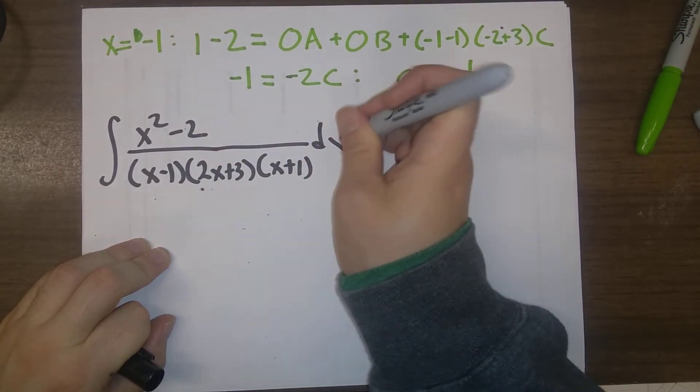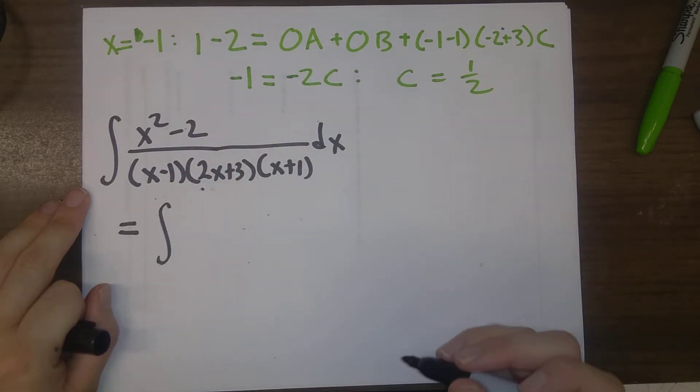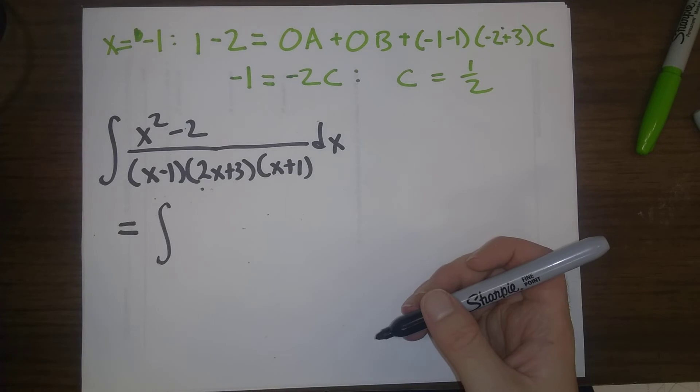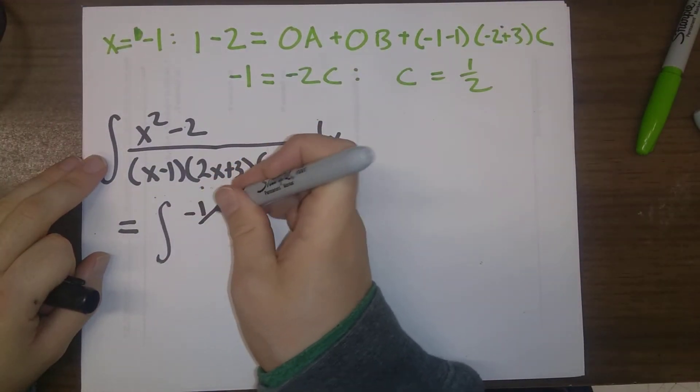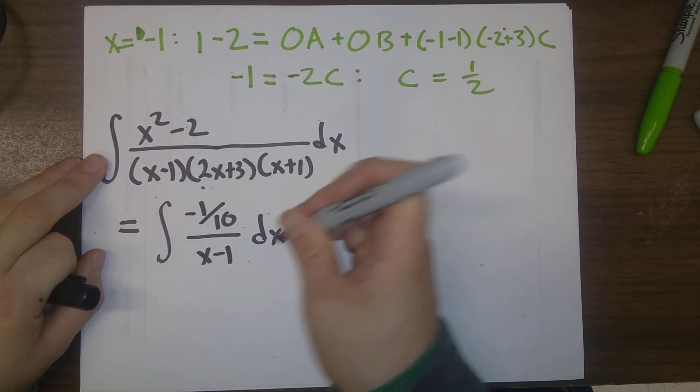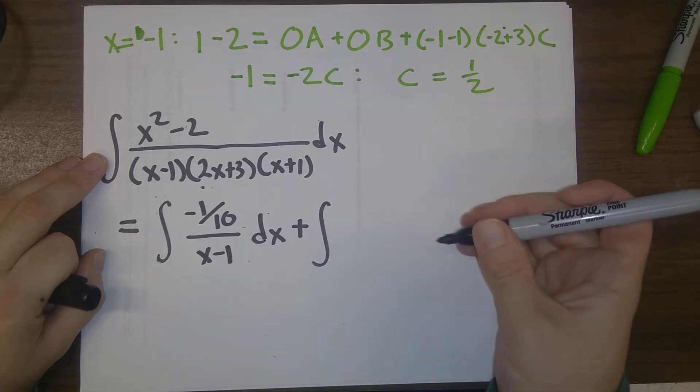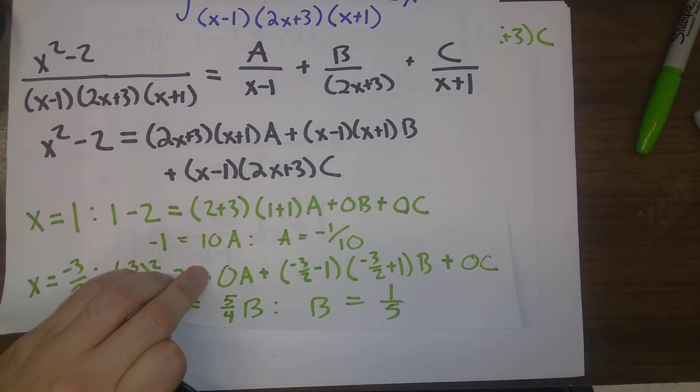The integral of A, which was minus 1 tenth over x minus 1, plus the integral of B, which was 1 fifth, and that's going over 2x plus 3.